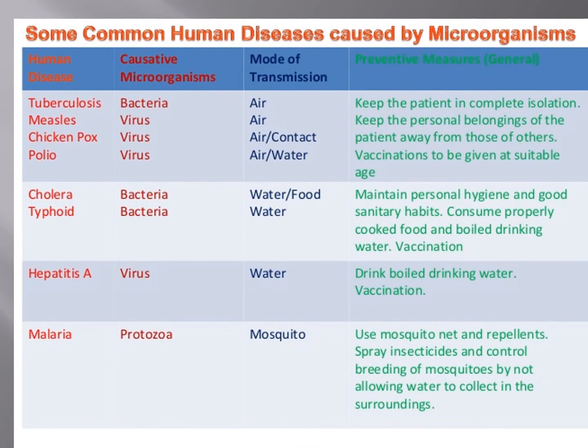Let's take a look at some common human diseases caused by microorganisms — covering the disease name, causative microorganism, mode of transmission, and preventive measures. Tuberculosis: the causative organism is bacteria, and the mode of transmission is air.